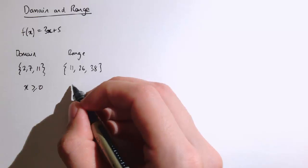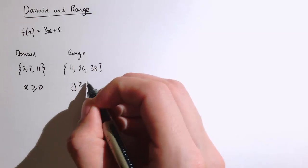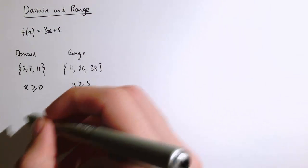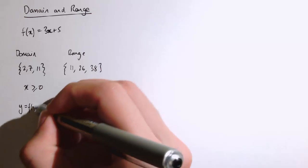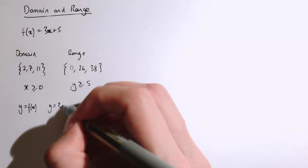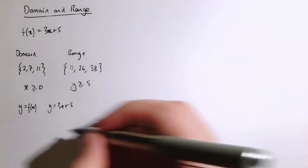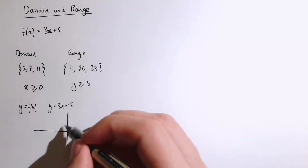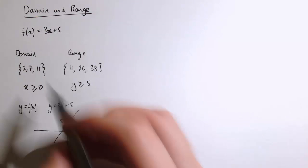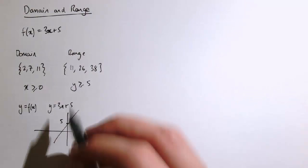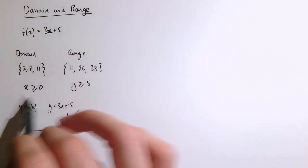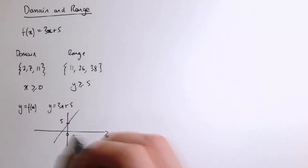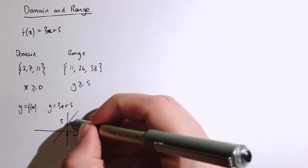The range would be values y greater than or equal to 5. If we think about the graph of y = f(x) or y = 3x + 5, this is a straight line that goes through 5 here, and the gradient is 3.